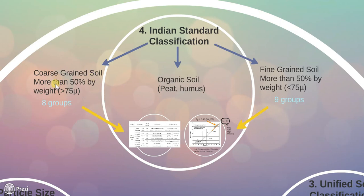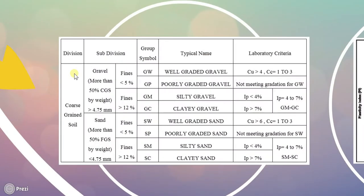Coarse-grained soil: in this, 50% or more of the total material by mass is retained on the 75 micron sieve. There are 2 subdivisions of coarse-grained soil. If 50% or more by weight is retained on the 4.75 mm sieve, they are known as gravel. If less than 50% by weight is retained on the 4.75 mm sieve, then the soil is known as sand.